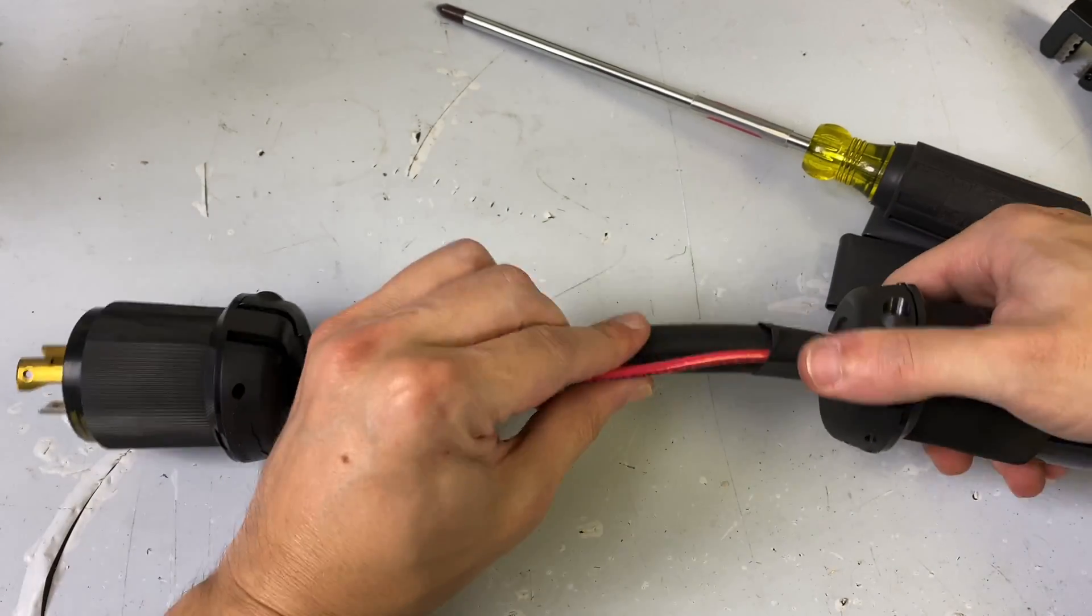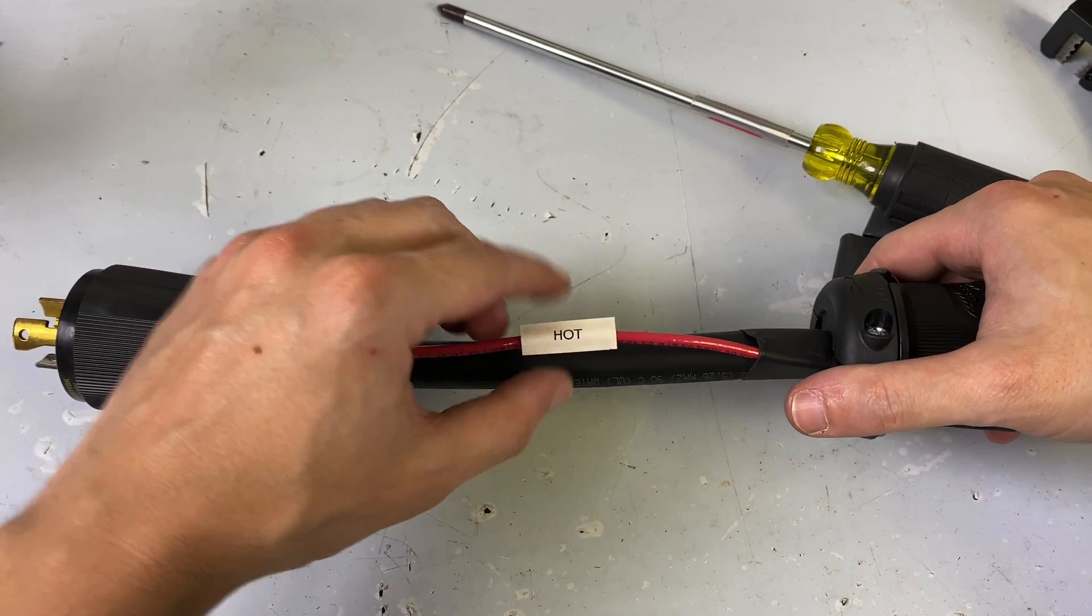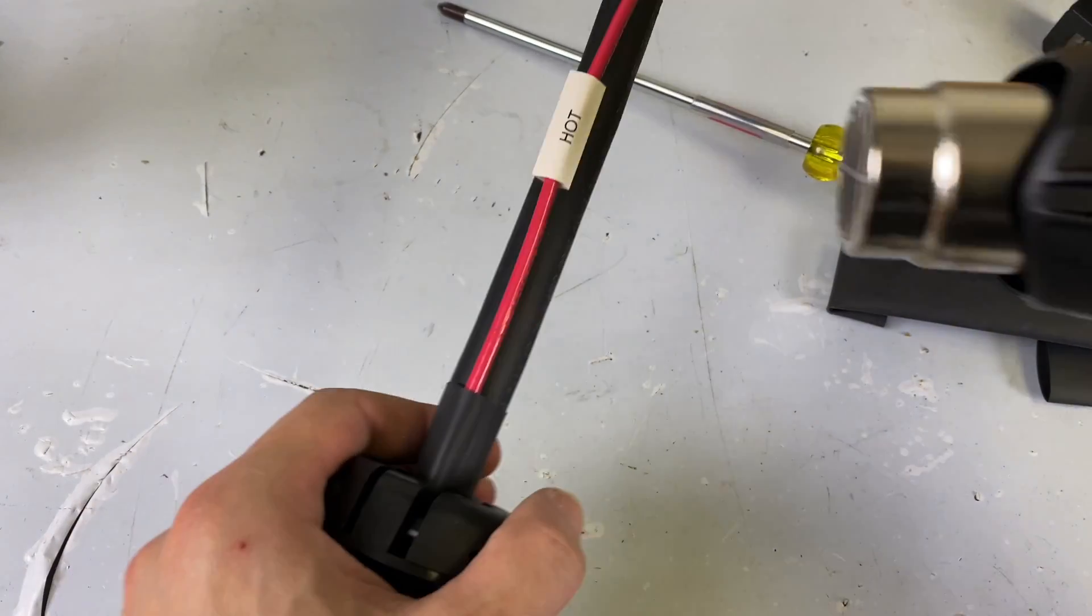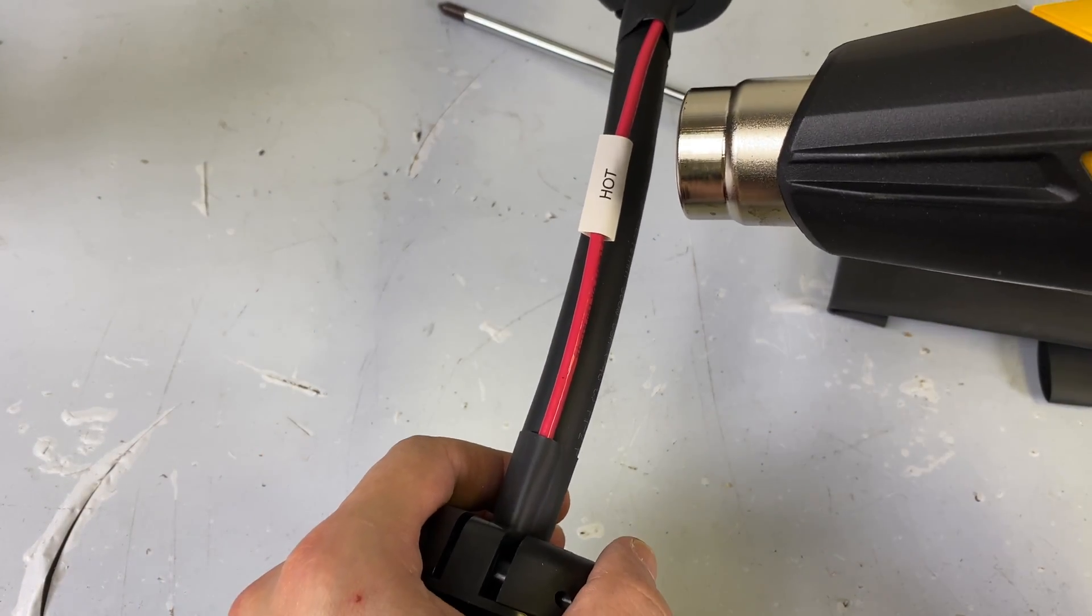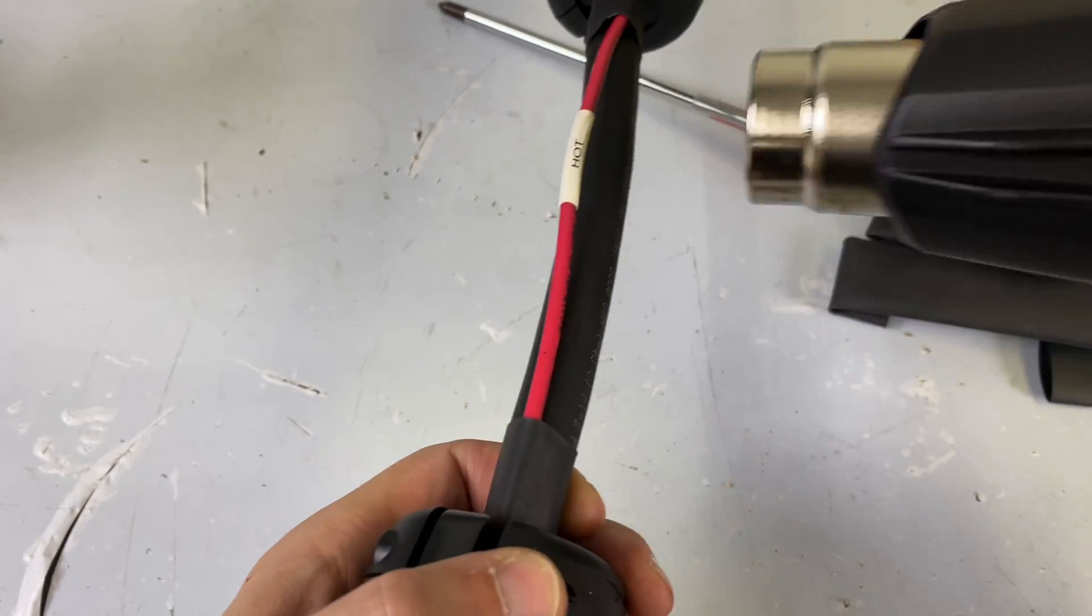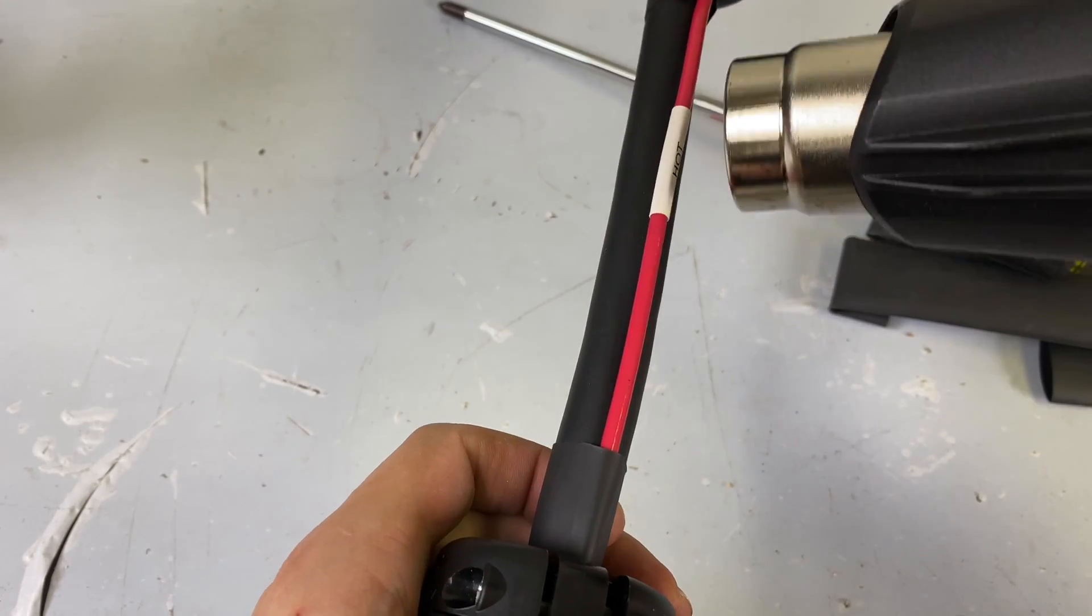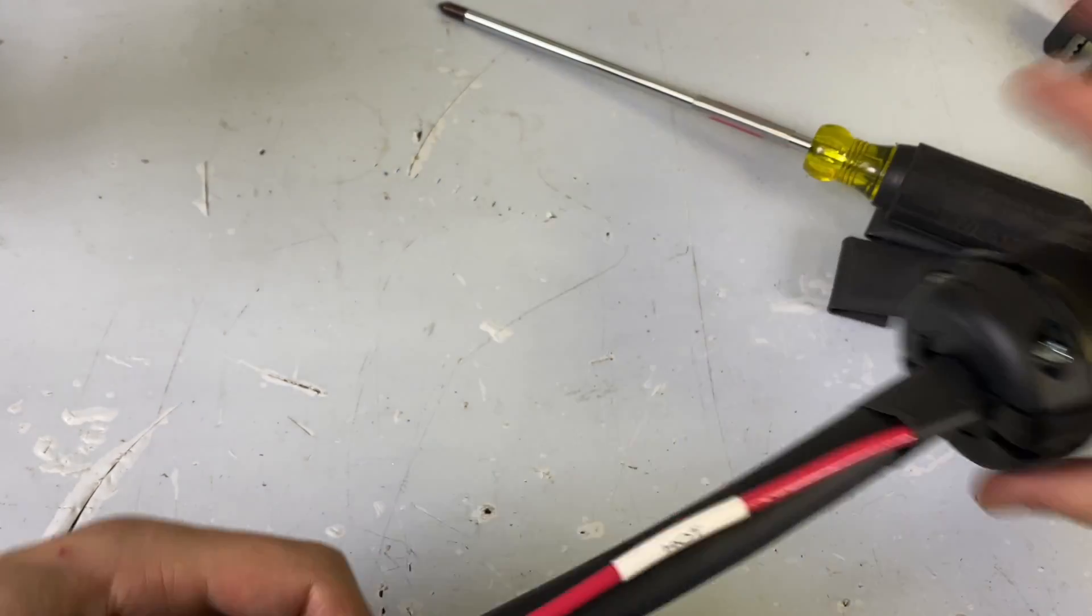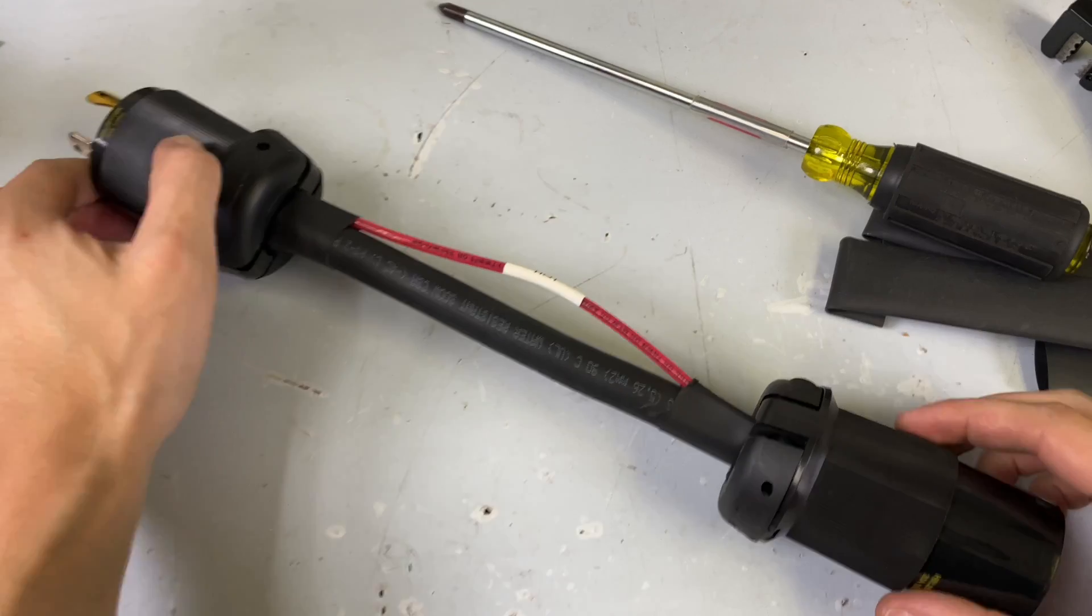All right, so those are our connected. We're just going to move our little piece of hot heat shrink right there. Okay, so that is our cable.